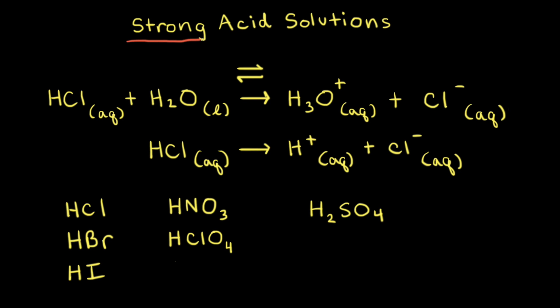A strong acid is an acid that ionizes 100% in solution. For example, hydrochloric acid, HCl, is a strong acid. It donates a proton to water, H2O, to form the hydronium ion, H3O+, and the conjugate base to HCl, which is the chloride anion, Cl-.